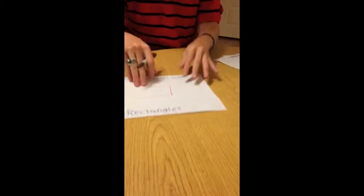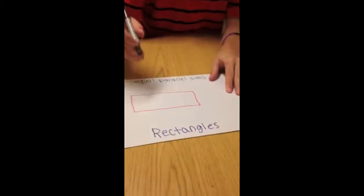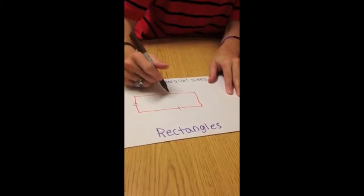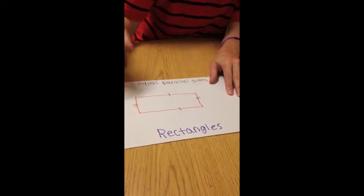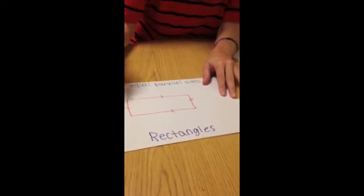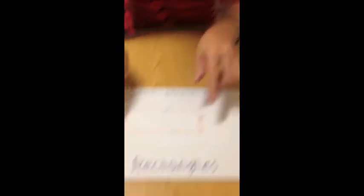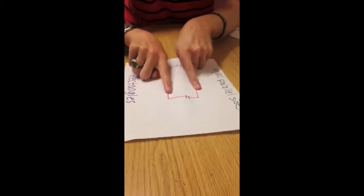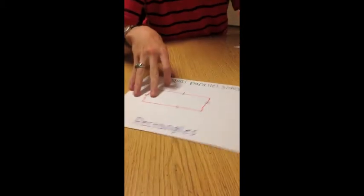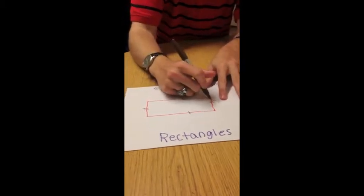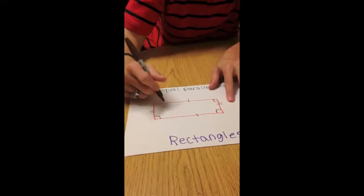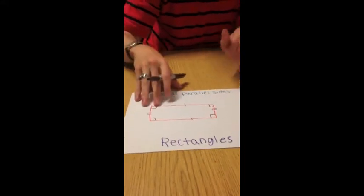The second type of quadrilaterals is the rectangle. The rectangle does not have four equal sides. It has two equal parallel sides, which means that the left and the right sides are equal, and the top and the bottom sides are equal. You can also indicate it with four right angles, as you can the square.